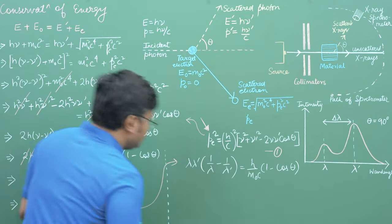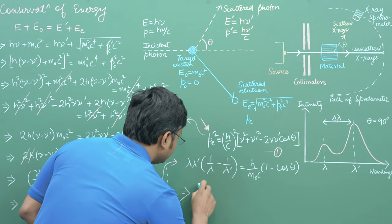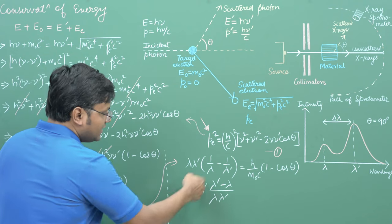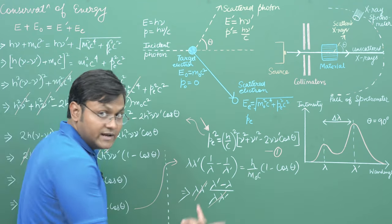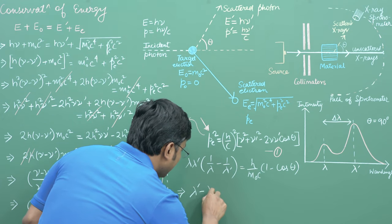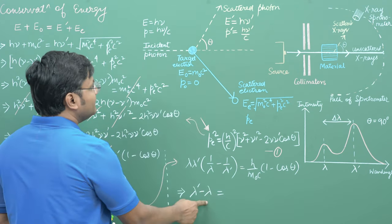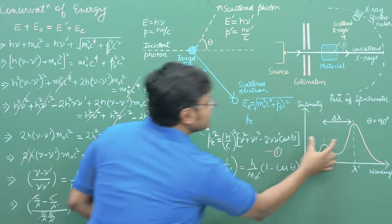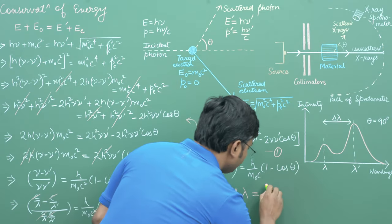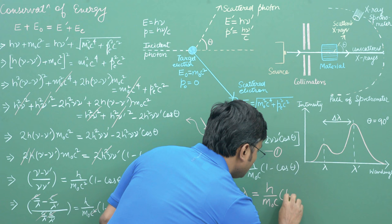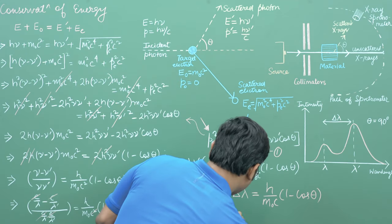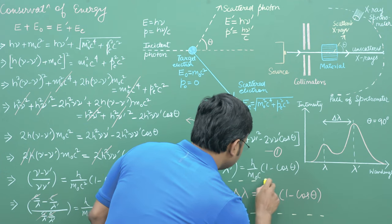Rewriting in terms of wavelength using ν = c/λ and ν' = c/λ', the expression (ν - ν')/(νν') becomes (λ' - λ)/c · (c²)/(c) which simplifies to λ' - λ. So we arrive at the Compton shift formula: Δλ = λ' - λ = (h/m₀c)(1 - cosθ), where h is Planck's constant, m₀ is the rest mass of the electron, c is the speed of light, and θ is the scattering angle. We have derived an expression for the Compton shift based on the particle picture of radiation.